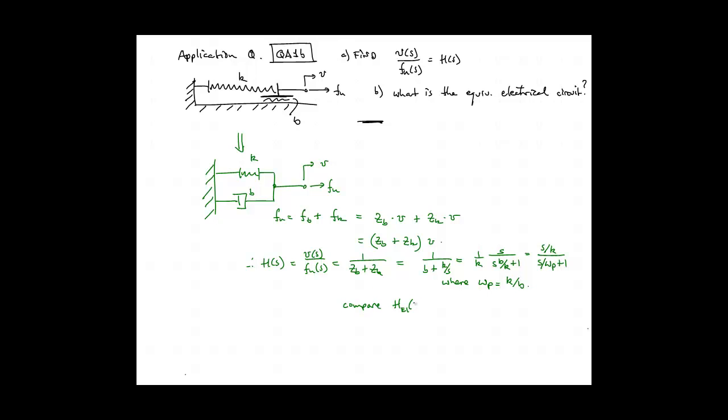We compare this to our previous example or problem E1, where we had 1 over B rather than S over K divided by a similar denominator. The omega P in this case is different than the one in problem E1. Here it is K over B, and in problem E1 it was B over M.